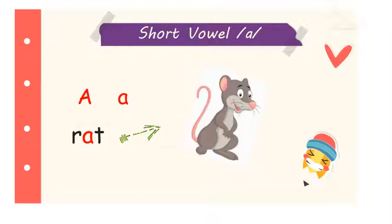Here we have RAT. Let's spell the word together: R, A, T — RAT. Can you hear the short vowel? The middle sound of the word RAT is the short A sound. RAT. Let's move on.